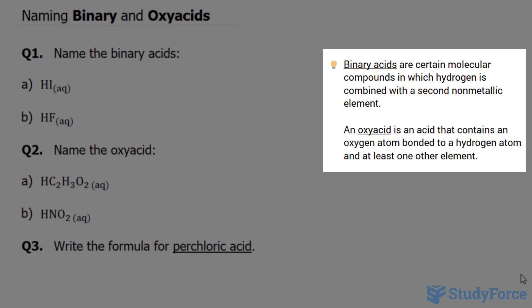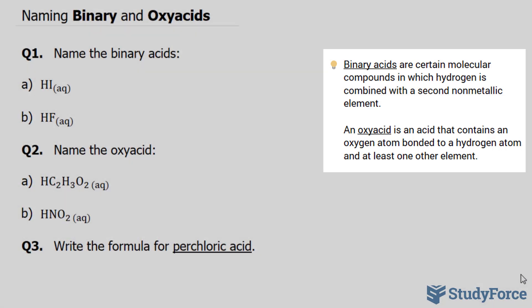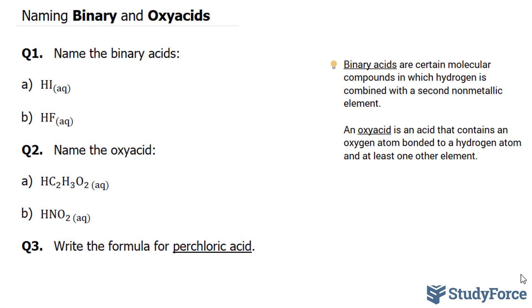On the contrary, an oxy acid is an acid that contains an oxygen atom bonded to a hydrogen atom and at least one other element. For this, think of a polyatomic ion with a hydrogen ion.